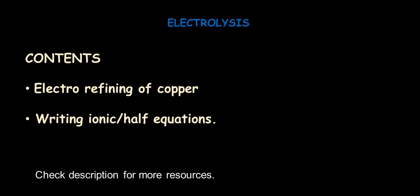In our earlier videos on electrolysis, we have already seen the electrolysis of molten compounds and the electrolysis of aqueous compounds. In this video, we will see how electrolysis is used to refine copper — that is, to purify the copper obtained from the extraction process — and the difference in writing the ionic equations for copper refining compared to aqueous compounds.